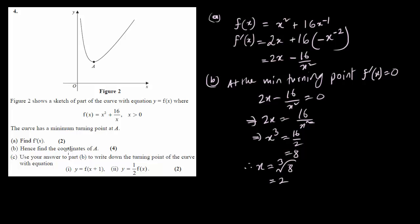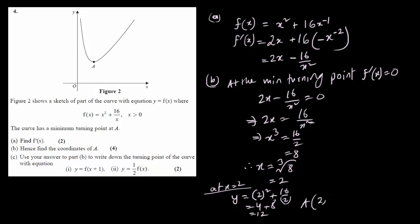We are asked to find the coordinates of A. We just found the x-coordinate, and now we need the y-coordinate. At x = 2, y = f(x) = x² + 16/x, so y = 2² + 16/2 = 4 + 8 = 12. Therefore the coordinate of A is (2, 12).